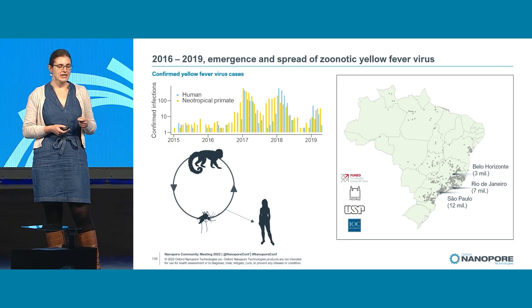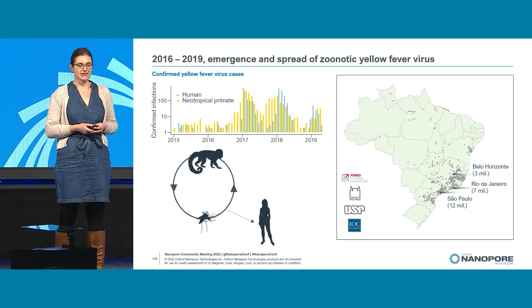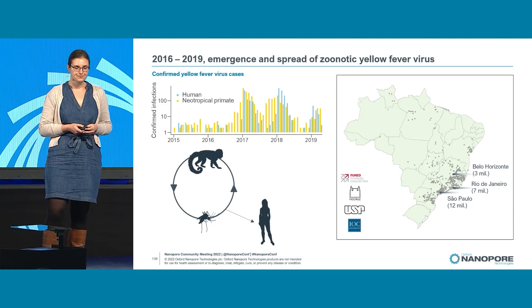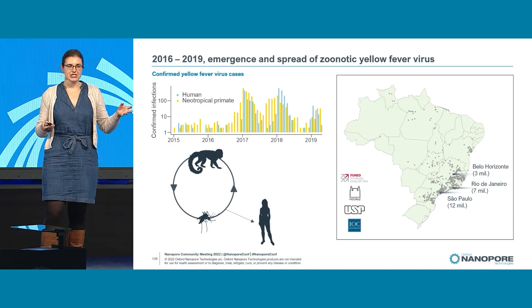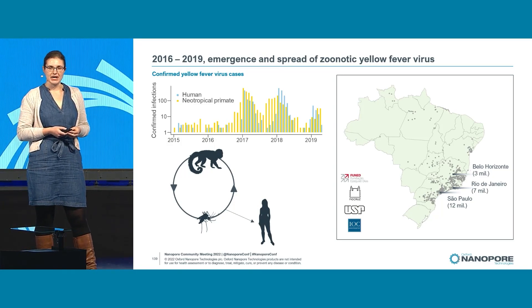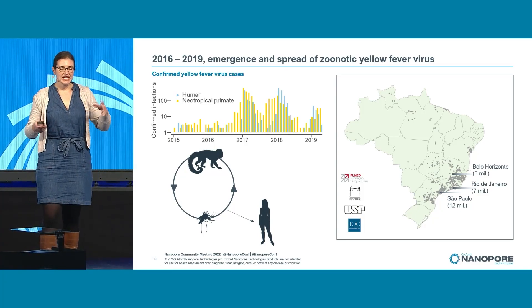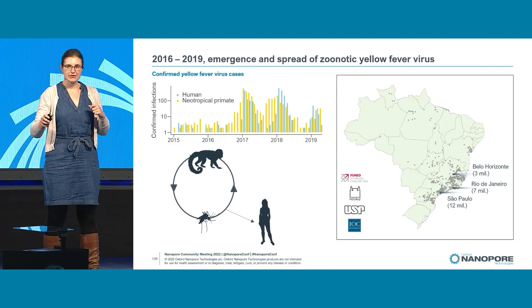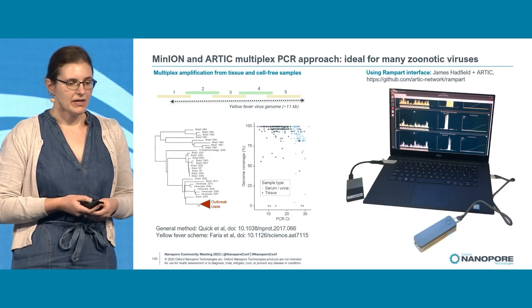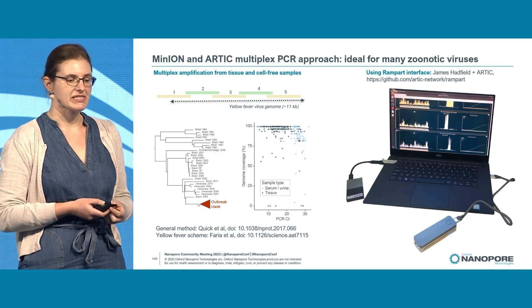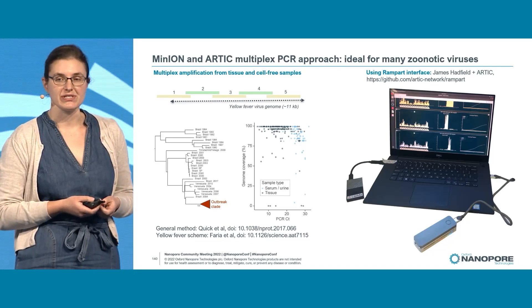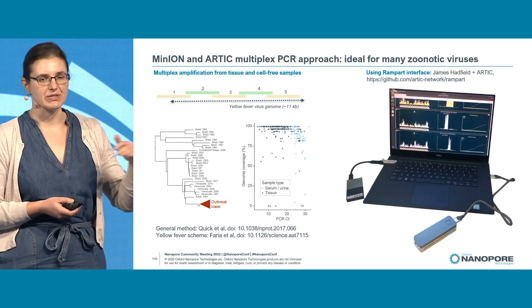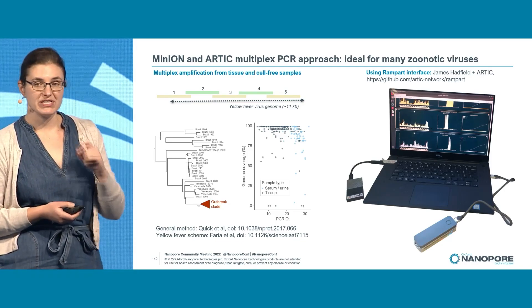To answer that question, we formed a partnership with institutions across southeastern Brazil, situated in Belo Horizonte, Rio de Janeiro, and São Paulo — the three largest cities in the most affected area. These institutes receive diagnostic samples from patients and from dead non-human primates. We applied a MinION-based ARTIC multiplex PCR approach, coordinated between different institutions, which is ideal for many zoonotic viruses and generates amplicons spanning the entire genome of yellow fever virus.